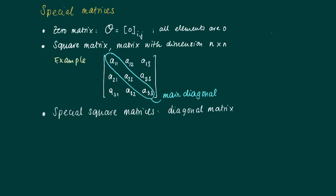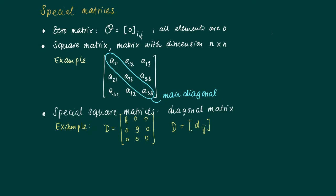This is a square matrix, and the elements of type a_ii together form the main diagonal of the matrix. Special square matrices are diagonal matrices, and diagonal matrices have the property that outside the main diagonal there are only zeros. For instance, matrix D has main diagonal entries 8, 9, and 0, and outside the main diagonal there are only zeros. An alternative formulation is that D consists of elements D_ij for which D_ij equals 0 when i is not equal to j.